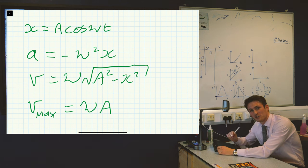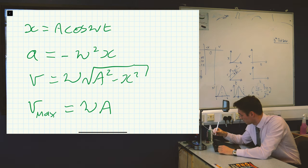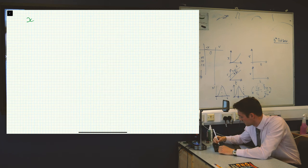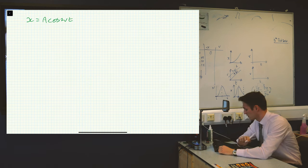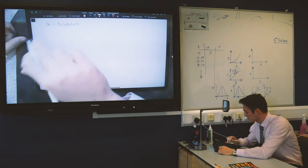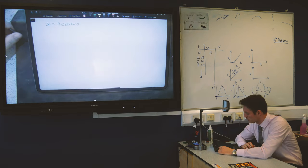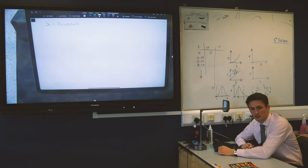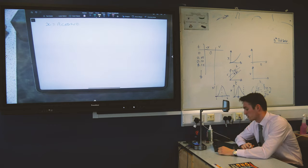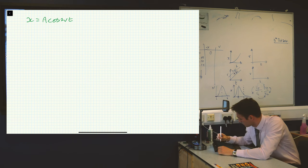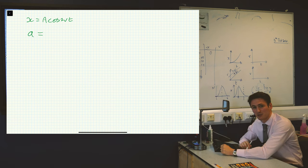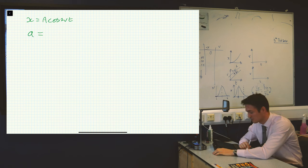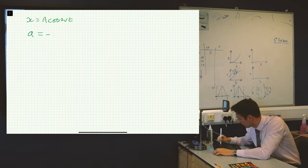In this video, we're going to derive a few equations to do with simple harmonic motion. The first one we'll look at is x equals the displacement, which is equal to the amplitude of the oscillation times cosine of omega t, where omega is the angular frequency. From this starting point, we're going to derive the fact that acceleration of a mass on a spring, a pendulum, or whatever system you're considering, is equal to minus omega squared times the displacement.